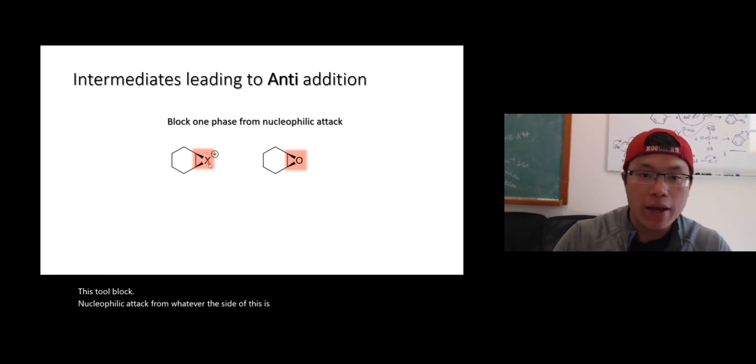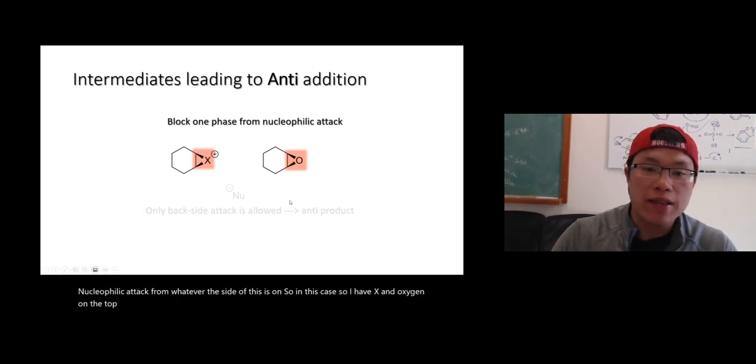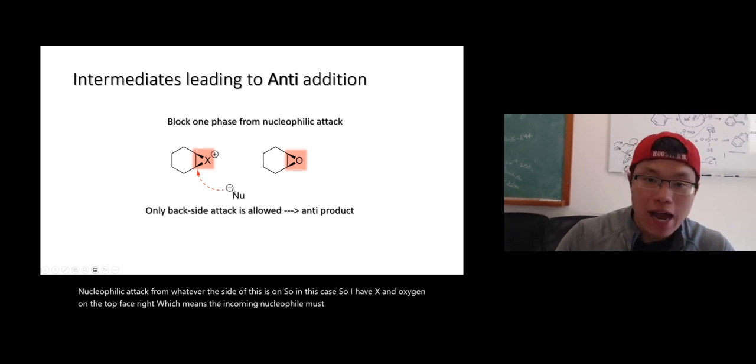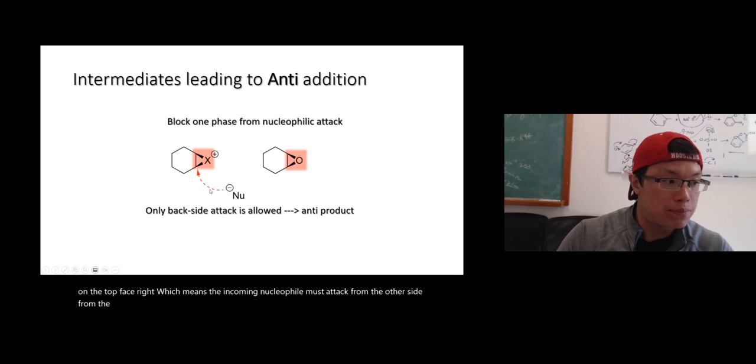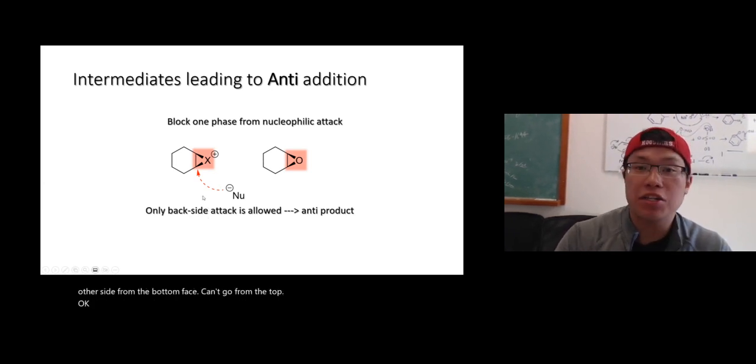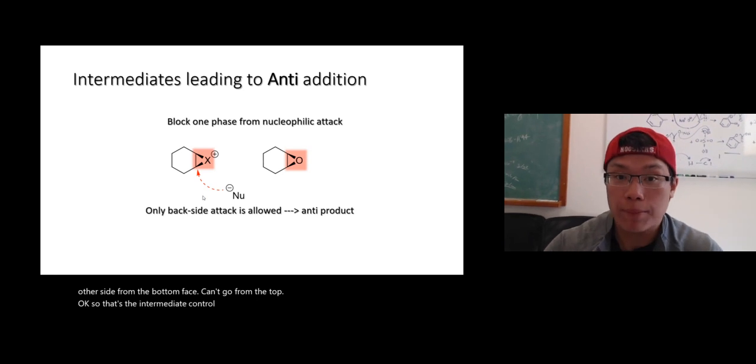If these two block nucleophilic attack from whatever the side of this is on. So in this case, so where I have X and oxygen on the top face, alright? Which means that the incoming nucleophile must attack from the other side, from the bottom face. Can't go from the top. Okay? So that, the intermediate control the stereochemistry outcome. You see that?